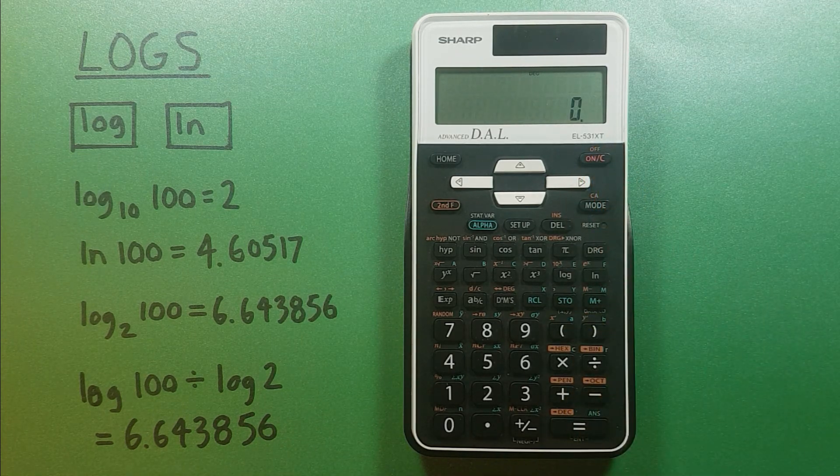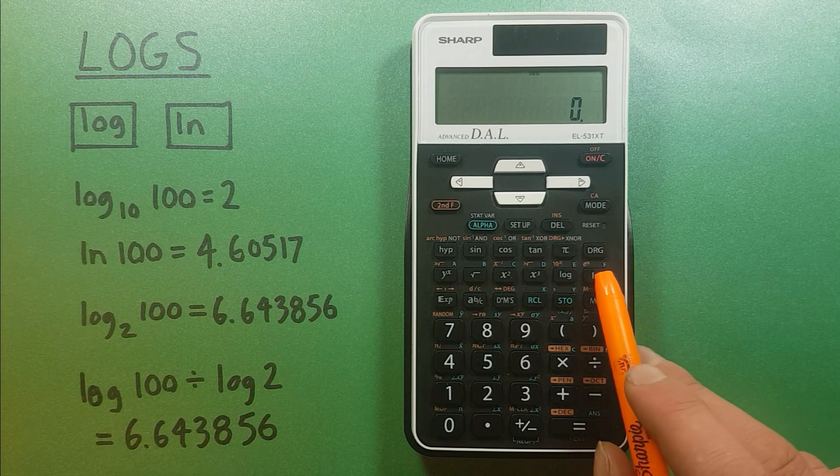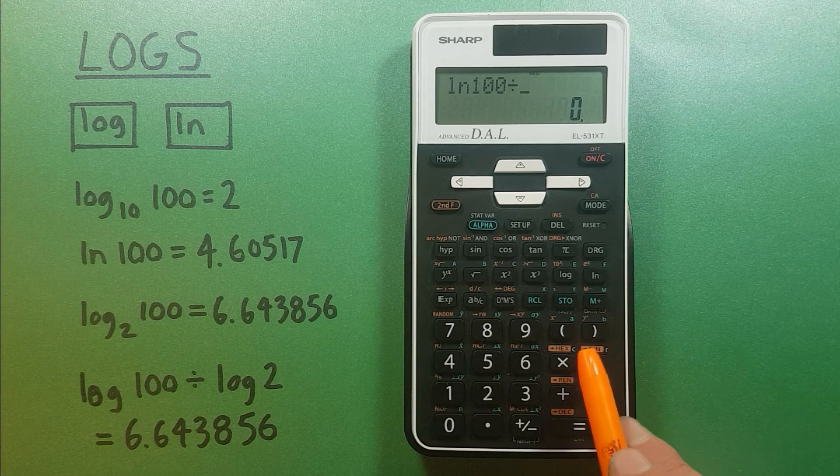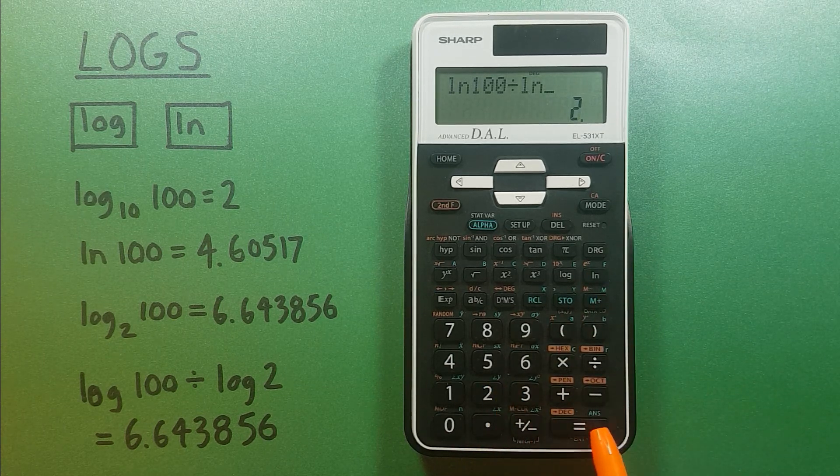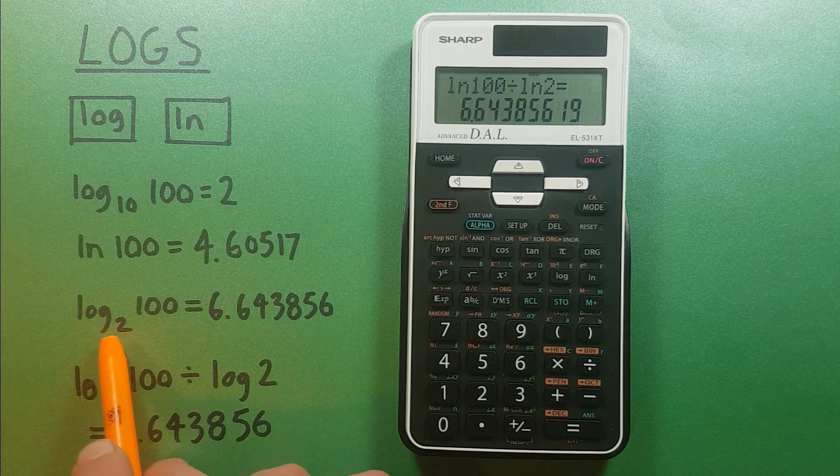Now since this is a ratio, we can also do this with the natural log or ln key. Pressing ln of 100 divided by ln of 2 equals will also give us the log base 2 of 100.